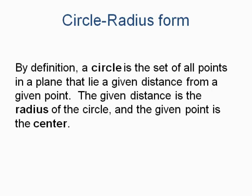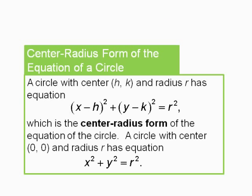By definition, a circle is a set of all points in a plane that lie a given distance from a given point. The given distance is the radius of the circle, and the given point is its center.